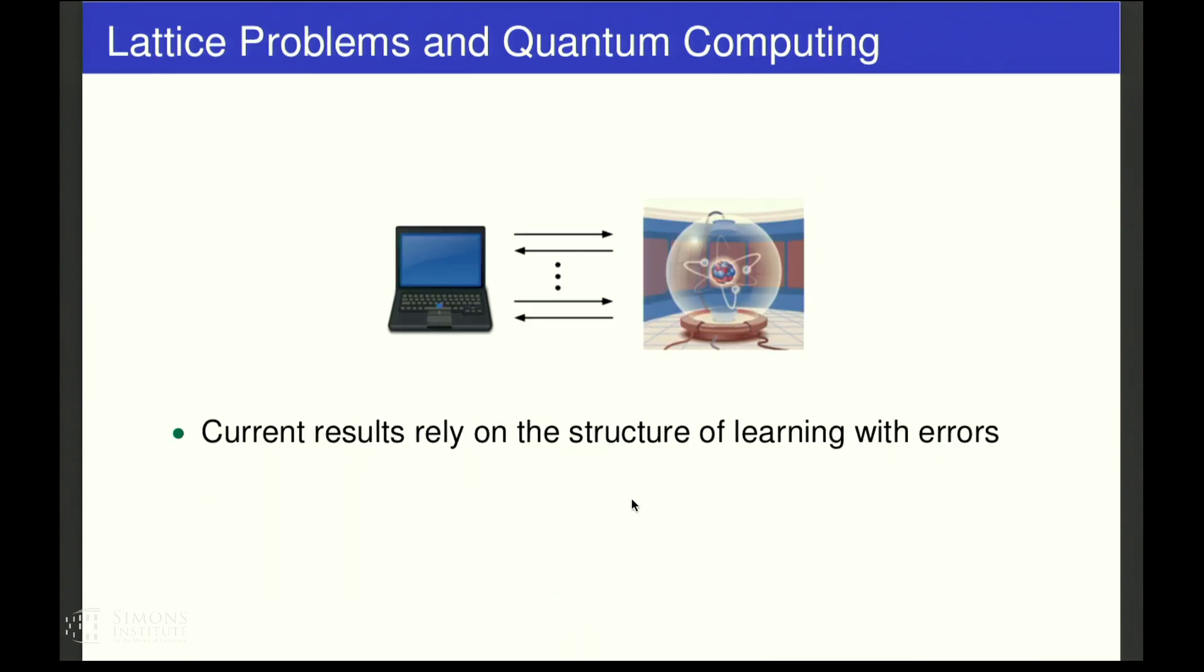This structure of using cryptography to allow the classical verifier power over a quantum prover has been used in a recent line of works to achieve various cryptographic tasks, including classical verification of quantum computation, homomorphic encryption, certified randomness generation, and quantum supremacy. All of these results rely on the assumption that the learning with errors problem is quantum secure.